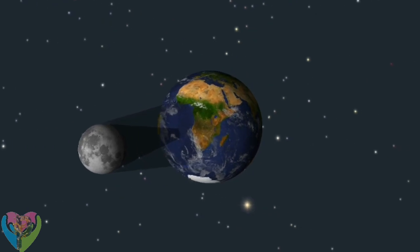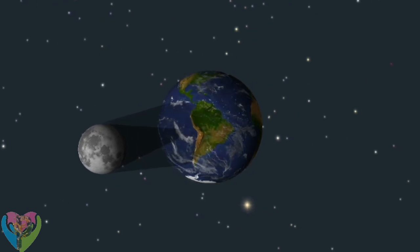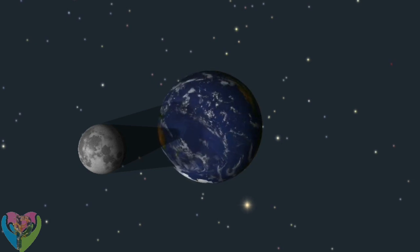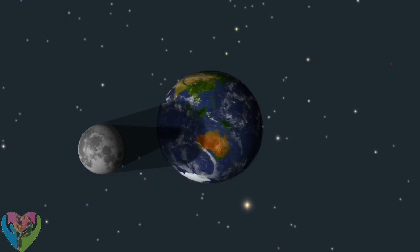The track of the Moon's umbral shadow is the path of totality. It is 10,000 miles long and 100 miles wide.